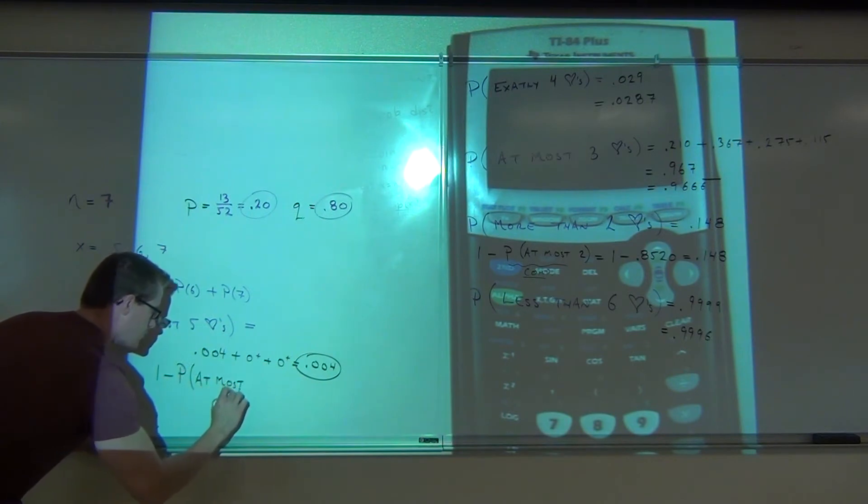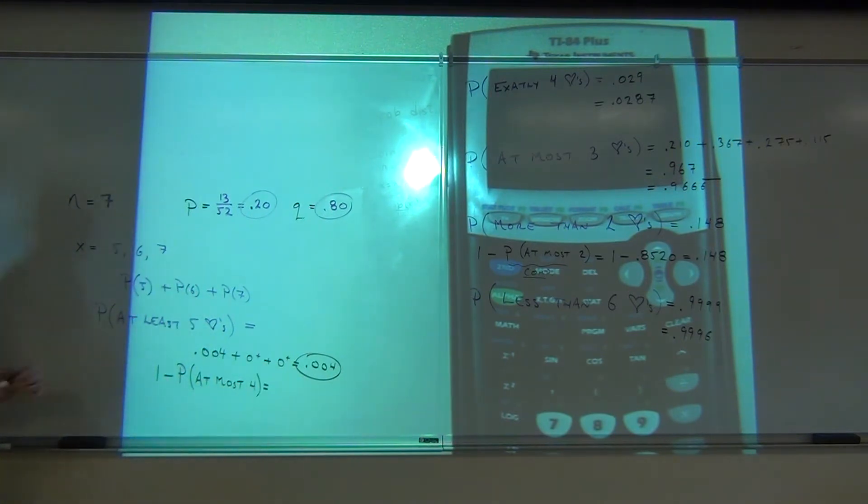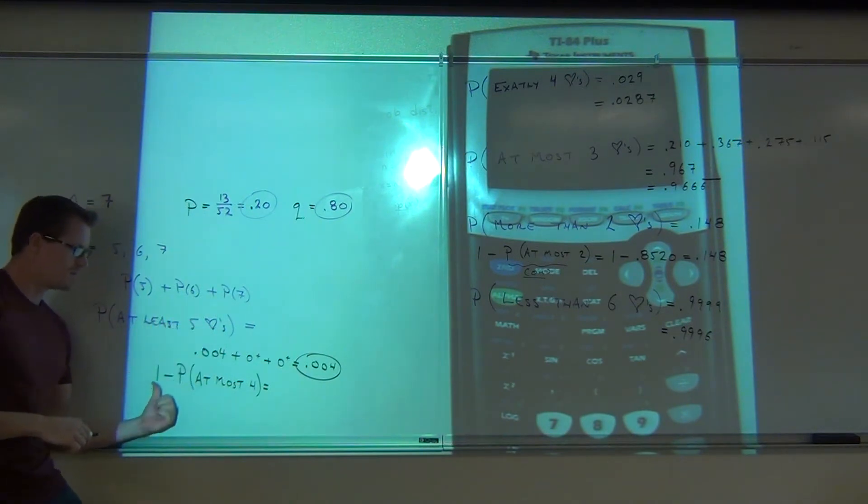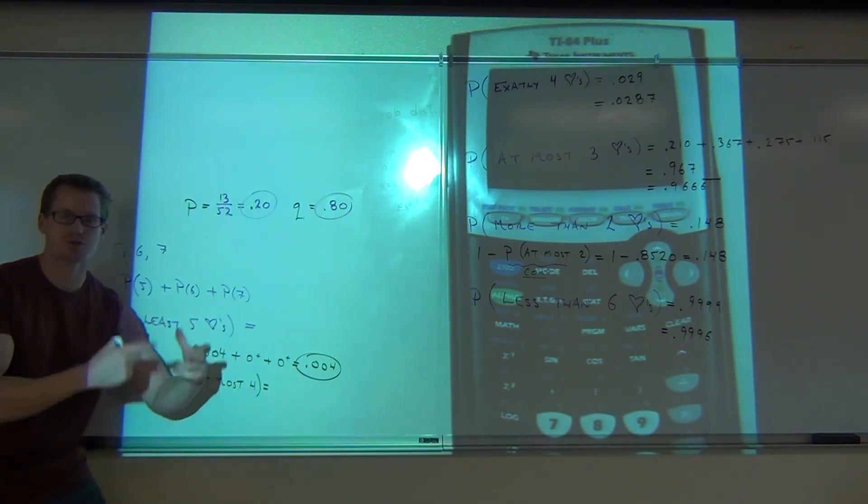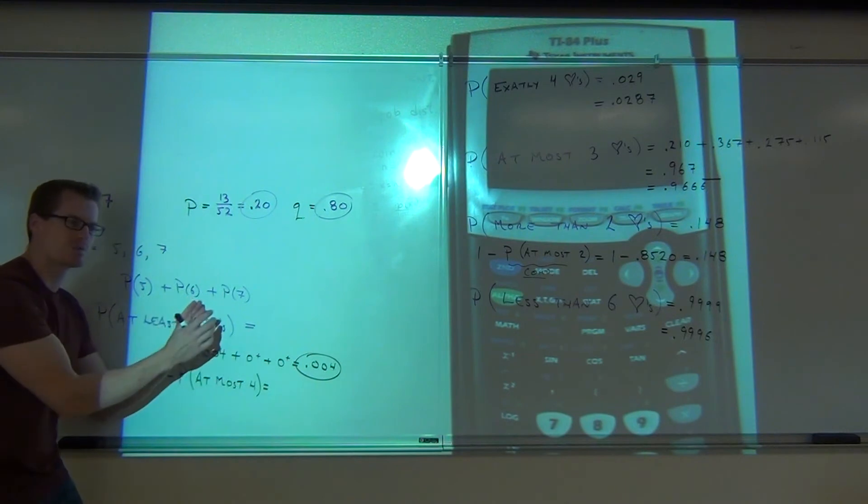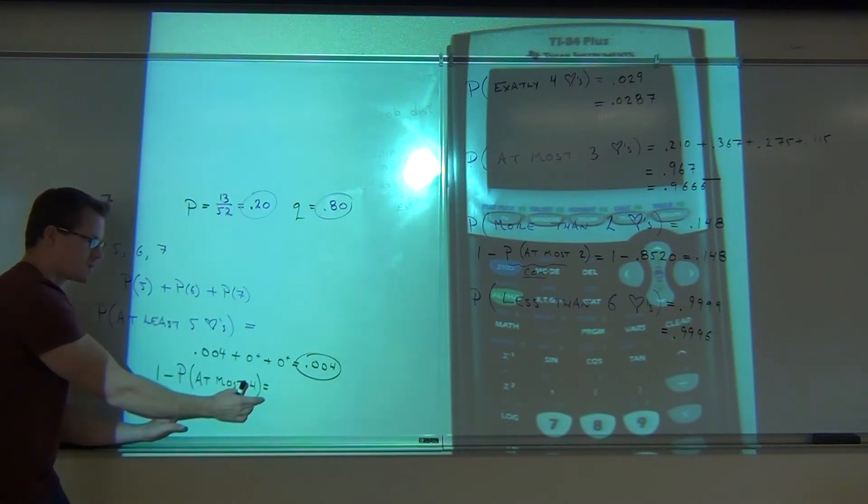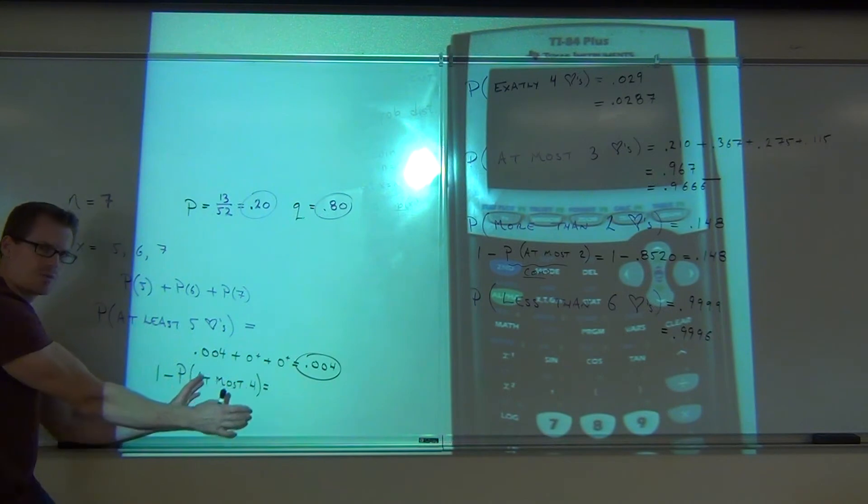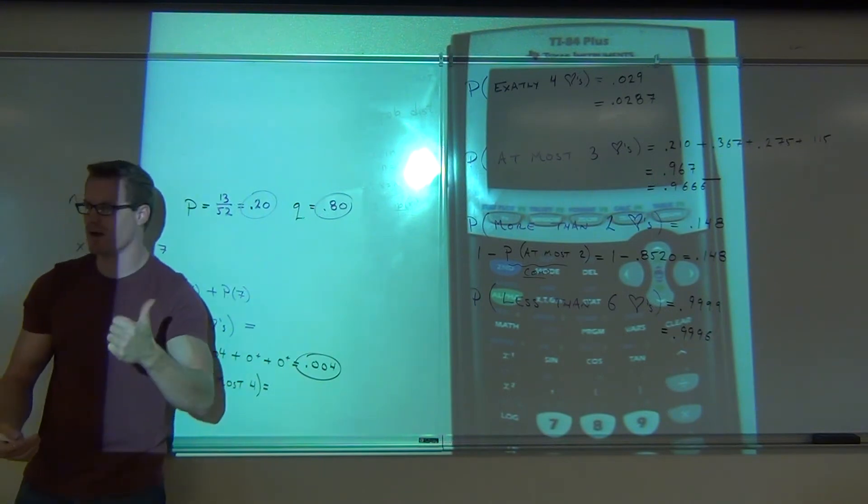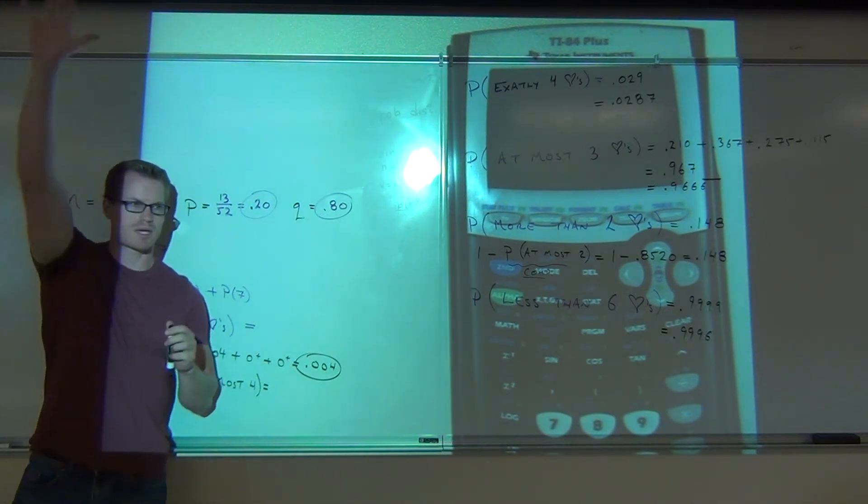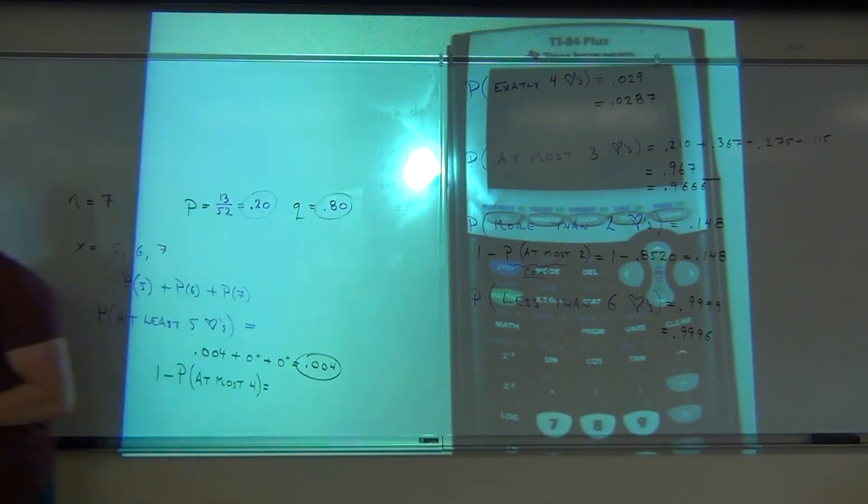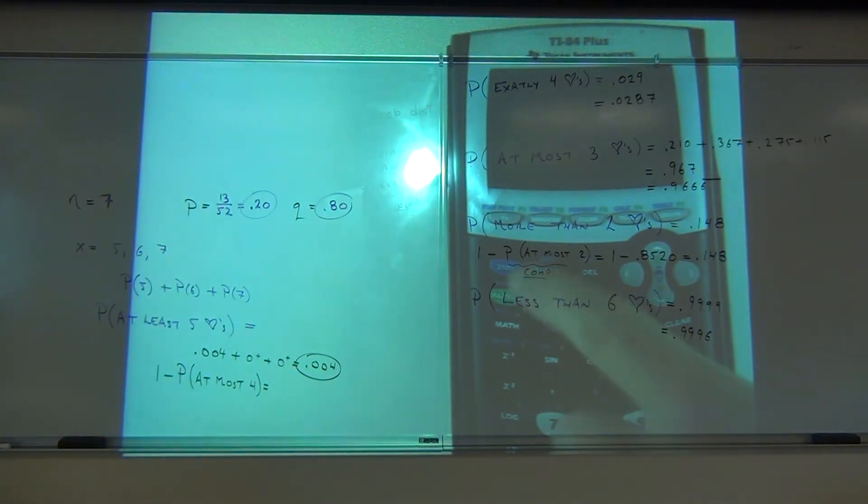If I want at least five parts, I'm going to take one minus the probability of at most four parts. Those are complementary events. We know they have to add up to one. So if I say probability zero one two three or four, subtract that probability from my one, I get the probability of five six or seven. Raise your hand if you're okay. Let's do it. Good.